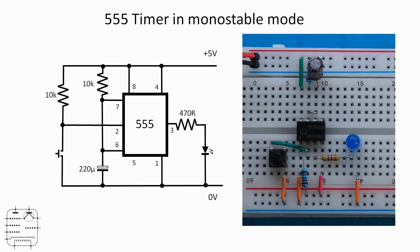Pressing the button causes the output to go high — the LED will light for its set amount of time depending on the capacitor and resistor values — then it goes out and stays out until another trigger is provided. On the breadboard you can see the current limiting resistor, yellow-violet-brown 470 ohm, and a blue LED, the control capacitor and its attendant resistor at the top, and the push button switch with its pull-up resistor at the bottom left. I'll be attaching probes to the output of pin 3, the top of the control capacitor, and the push button switch.